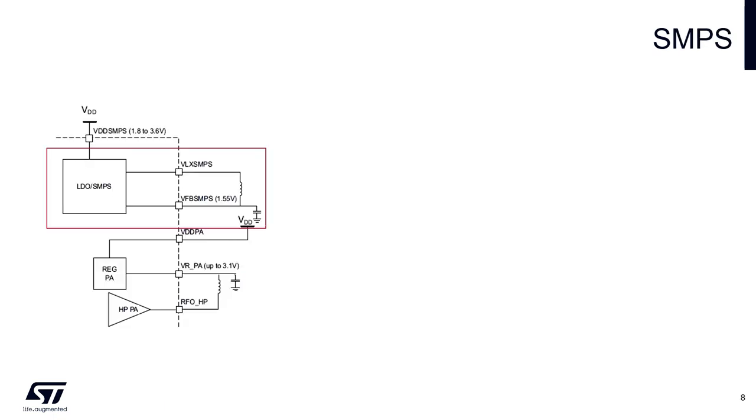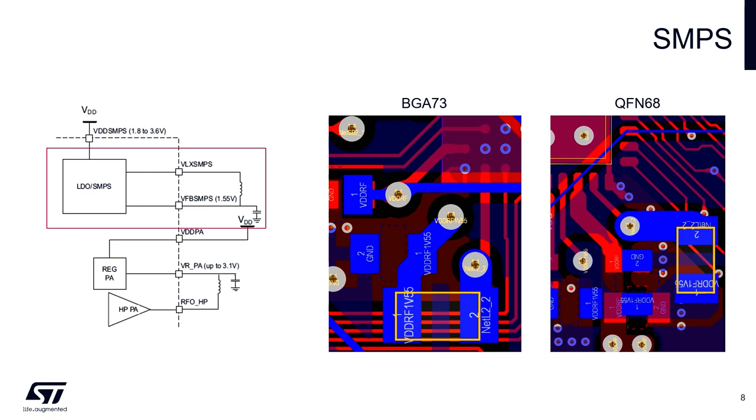In the SMPS part, the inductor must be placed as close as possible to the SMPS pins. Here we can see the examples with BGA and QFN packages. The ground plane, which is disabled in the pictures, is recommended below this section. Wide traces are also recommended if possible.